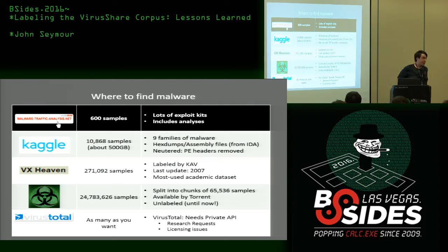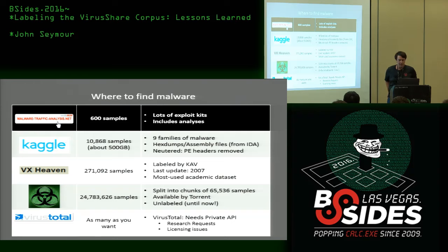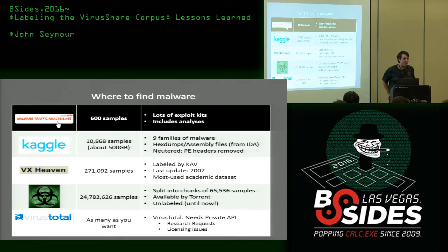All the malware is available by torrent with a simple password. The guy is awesome — I like him a lot. The main issue with this dataset is that it was unlabeled. As the last talk mentioned, ground truth is really, really important when you're doing machine learning, but it's also the most expensive part — really hard to do. So what we've done is label this corpus.